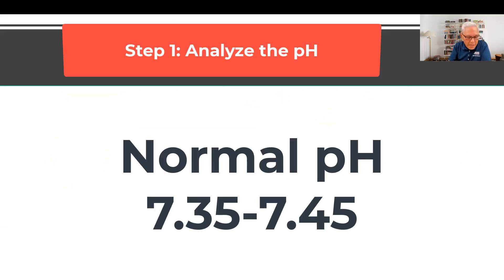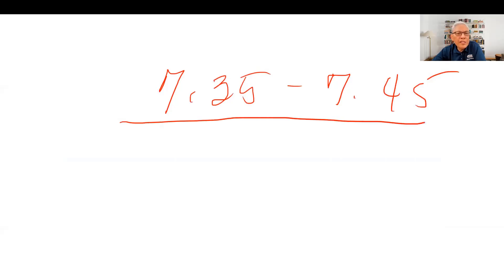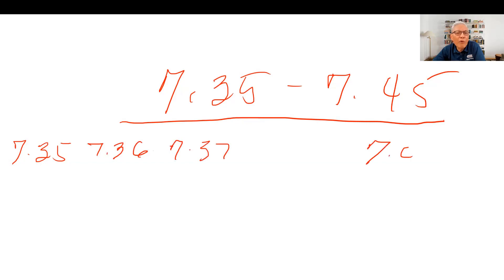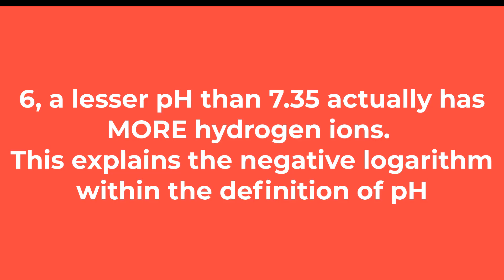The normal range for pH is 7.35 to 7.45. That means anywhere from 7.35, 7.36, 7.37, and so on up to 7.45 are all within normal pH range. If I have a pH of 6 versus a pH of 10, which has a bigger number of hydrogen ions? The one with the lesser number has more hydrogen ion.